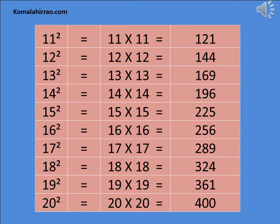18 square is equal to 18 multiplied by 18 is equal to 324. 19 square is equal to 19 x 19 is equal to 361. 20 square is equal to 20 x 20 is equal to 400.